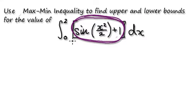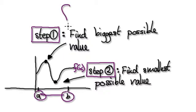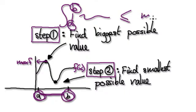As a clue, the first step — suppose you have a function f of x — the first step is to identify the biggest possible value that f can be within our range, within a and b. Within this region, find the biggest possible value that f can be. The biggest will be around here, so this will be the max of f.